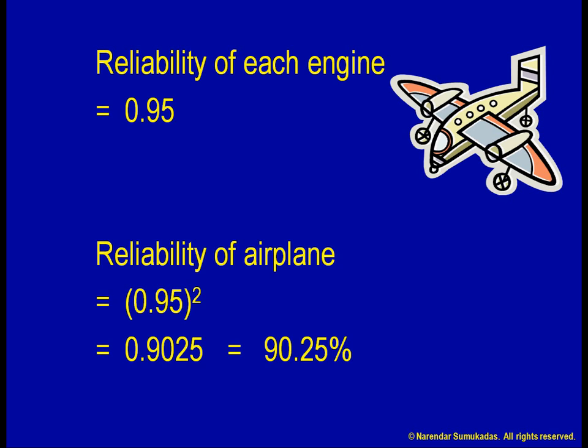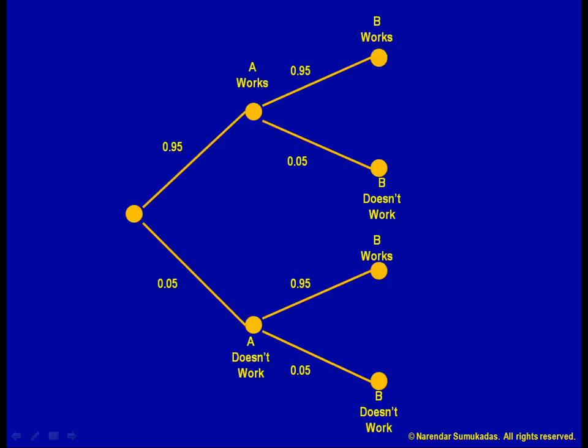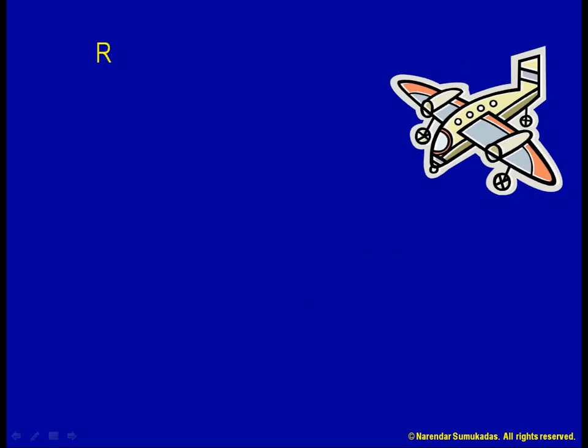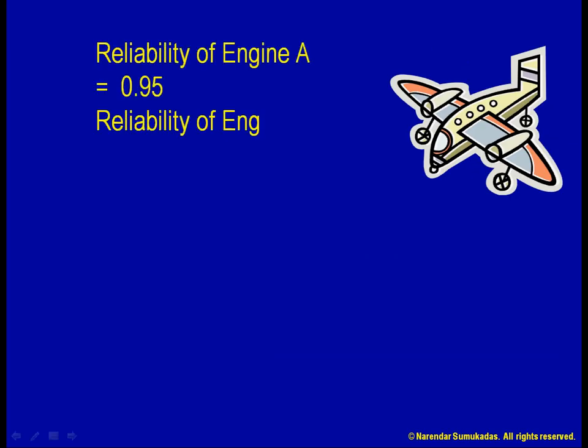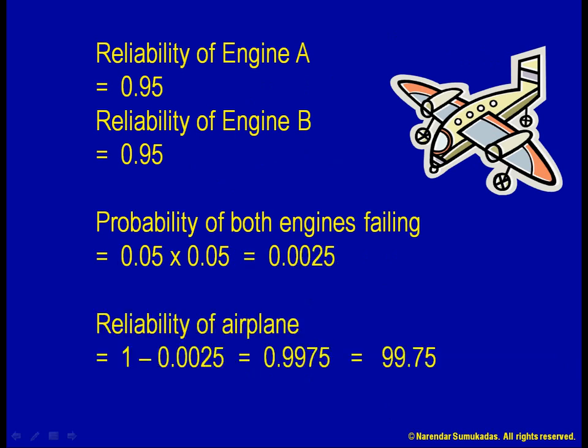On the other hand, suppose I told you that one engine is sufficient to keep the plane aloft. Let us look at the probability tree diagram. My concern is only about both the engines failing. The probability of that happening is only 0.25% or 1 in 400. Equipped with two independent engines, I have a certain redundancy built in, which dramatically improves reliability. My plane is now 99.75% reliable. Maybe I can make do with a parachute from the local dollar store.